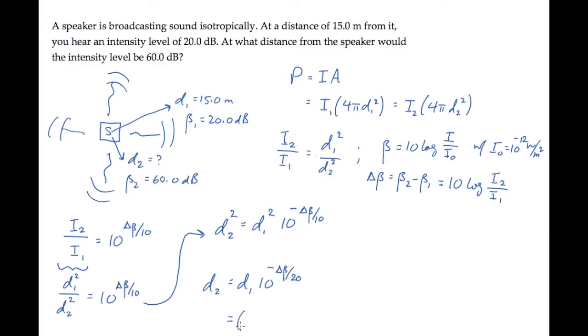Substitute the known values with d1 equals 15 meters. And delta beta, beta2 minus beta1, gives us 60 minus 20 dB, which works out to 15 meters times 10 to the minus 2, or 15 centimeters.